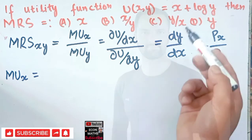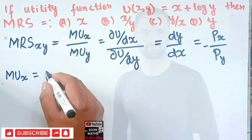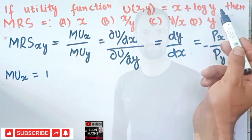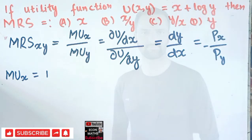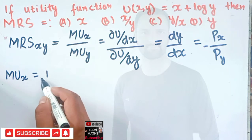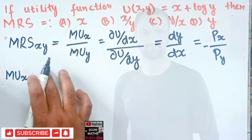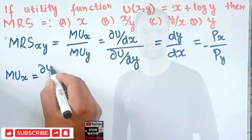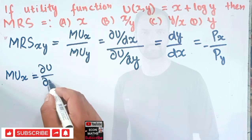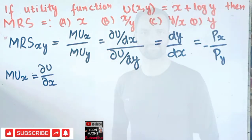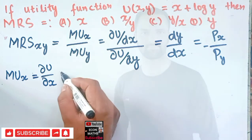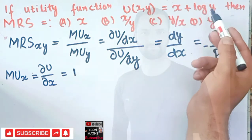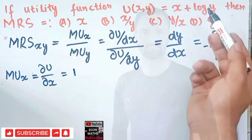The derivative of x with respect to x is 1. The derivative of log y with respect to x is 0, because no x is involved in that term. So marginal utility of x equals du/dx, which equals 1 plus 0, giving us marginal utility of x equal to 1.